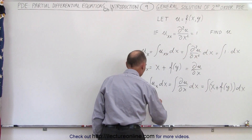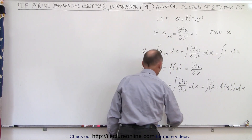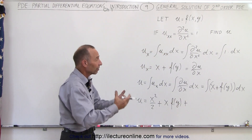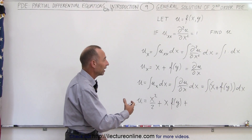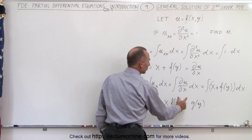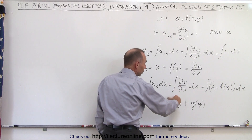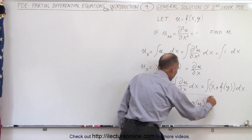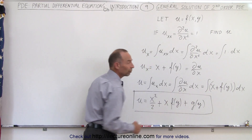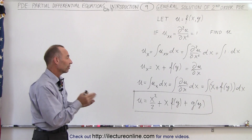Integrating gives us u equal to x squared divided by 2, plus x times a function of y. Since we're integrating again, we need another function of integration for the remaining constant variable — let's call that g of y. So u equals x squared over 2, plus x times f(y), plus g(y). Each time we integrate in a partial differential equation, we add a function depending on the variable being held constant.